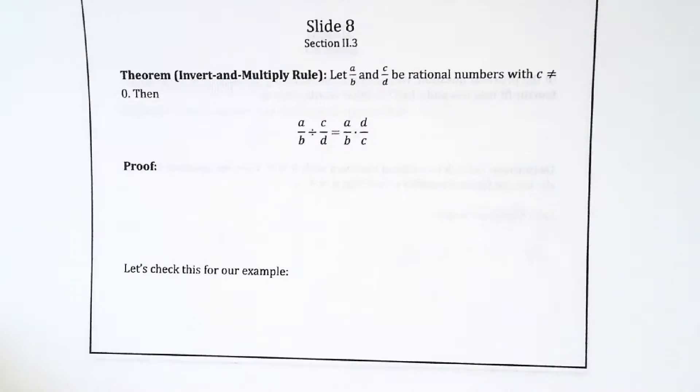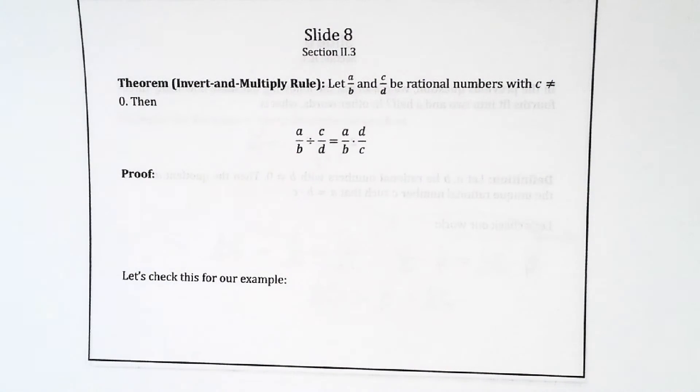So we have this thing that we all learned in grade school, the invert and multiply rule, which is that A over B divided by C over D is the same as A over B times D over C.